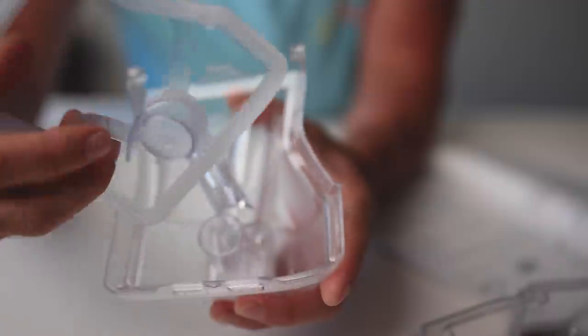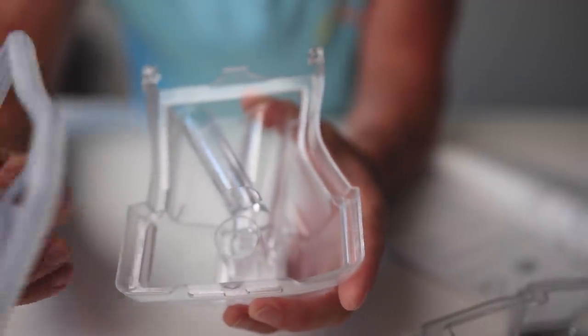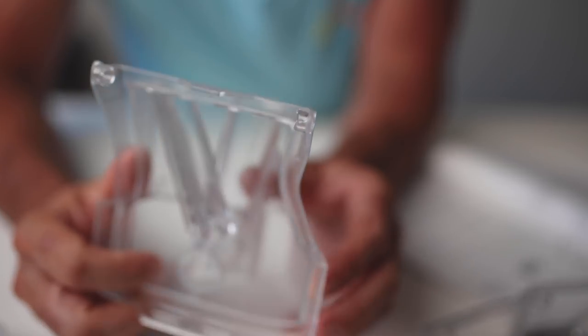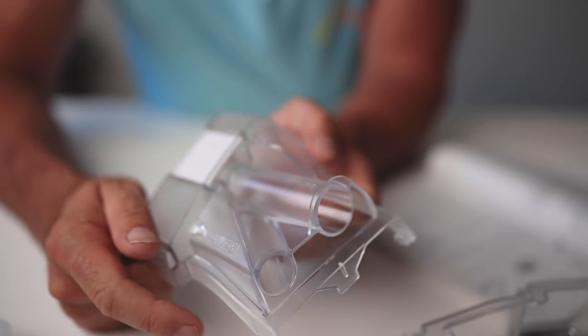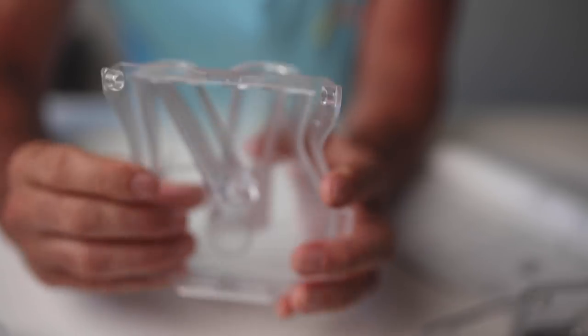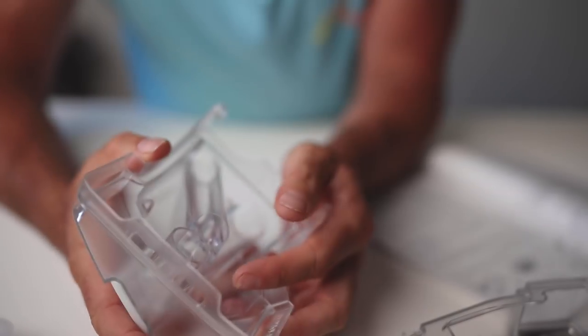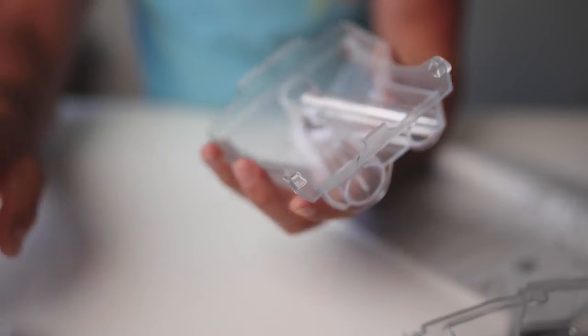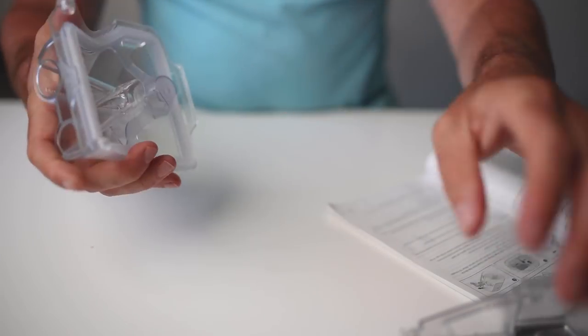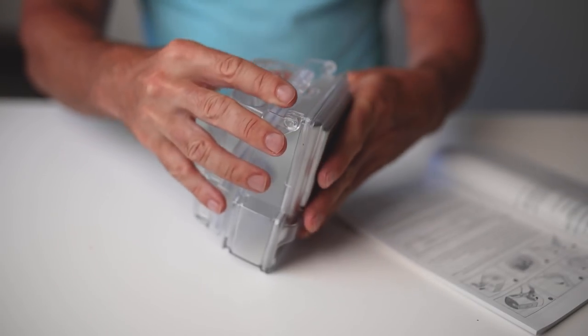The top section, this little part here, just peels off, there's no magic clips, and give that a wipe down. In here as well, if you've got a little tube brush, which all of you should have, you can run your little tube brush in through the holes and then once again just give it a little soak in some warm soapy water or in the vinegar as well. Pretty straightforward guys.